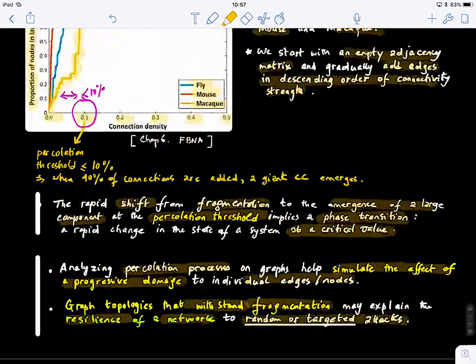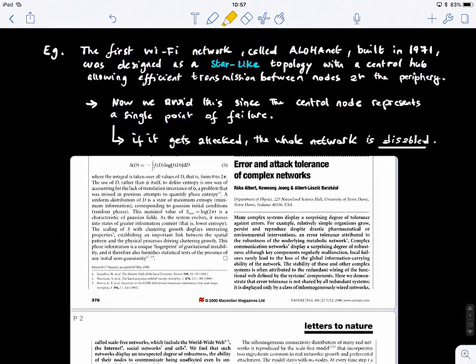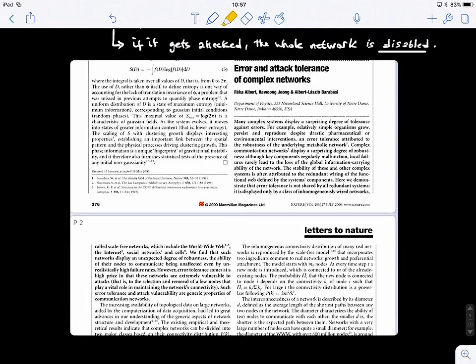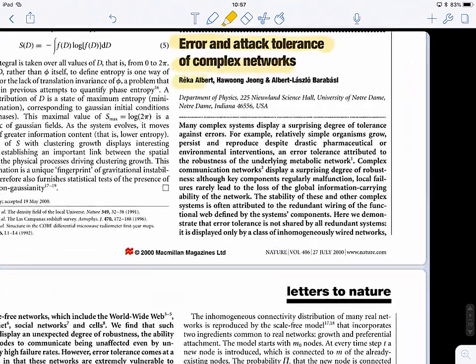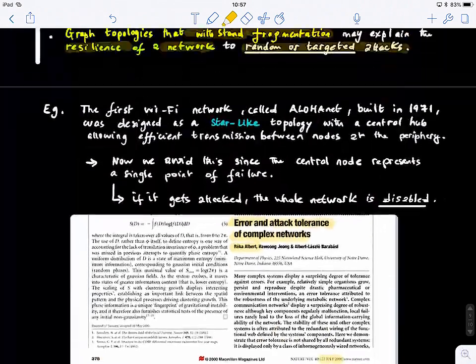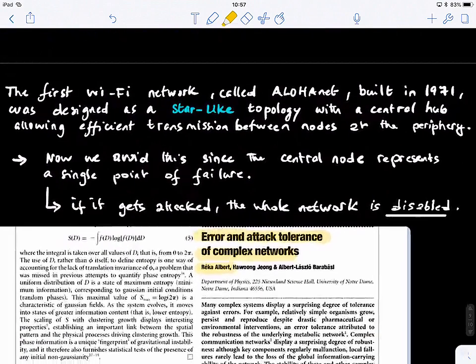So today what we'll look at is, we will look at this paper, Error and Attack Tolerance of Complex Networks, published by Erika Albert and colleagues in Nature Journal in 2000, right? It's an interesting read, but before that, I'll give you a final example.